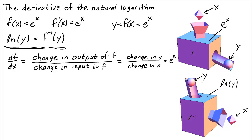So we can denote the sphere by y and the tetrahedron by x. So if y = f(x) = e^x, then x = f inverse of y, which is ln(y).